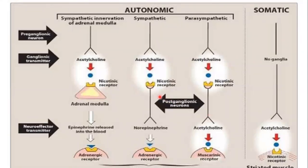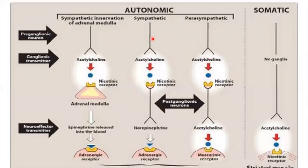In the sympathetic nervous system we also have the pre-ganglionic and post-ganglionic neurons. The pre-ganglionic neuron of the sympathetic nervous system is a cholinergic neuron — it releases acetylcholine. However, the post-ganglionic neuron of the sympathetic nervous system does not release acetylcholine; it releases norepinephrine, making it an adrenergic neuron. So in the sympathetic nervous system, only the pre-ganglionic neuron is cholinergic.